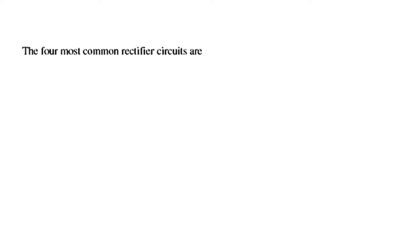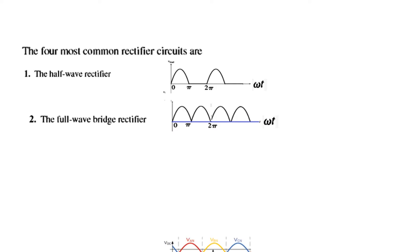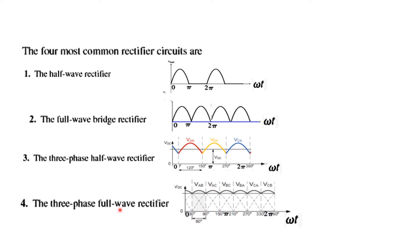So the most common type of rectifiers, four most common are as shown here. First is the half wave rectifier. And this is how the output looks. And then we have full wave bridge rectifier. Any full wave rectifier will look like this. Then third is the three phase half wave rectifier. So the output is much better now, smoother than these. And finally we have three phase full wave rectifier whose output is quite smooth.